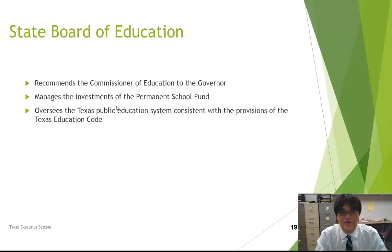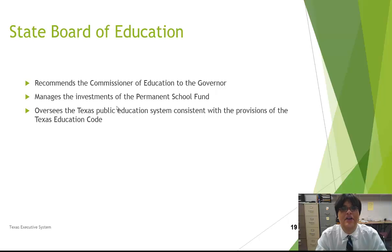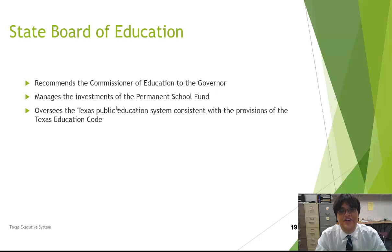The State Board of Education recommends the Commissioner of Education to the governor and manages investments in the Permanent School Fund, which was established by the Constitution of 1876. It oversees the Texas public education system, which must be consistent with the provisions of the Texas Education Code. The State Board of Education is part of the executive branch due to its administrative duties for the education system here in Texas.